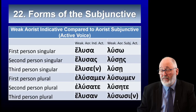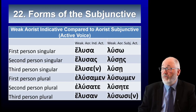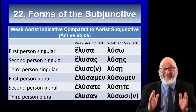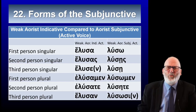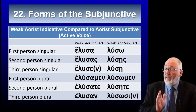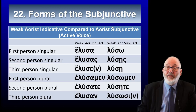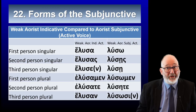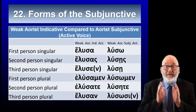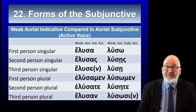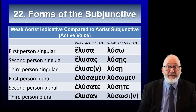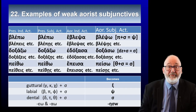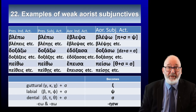What about the aorist? The aorist indicative active of luo is elusa, elusas, elusen. The aorist subjunctive active is lusō, lusēs, lusē. 'Go long' has kind of worked, but we've also added a sigma and used the endings — o, ēs, ē, ōmen, ēte, ōsin — which were the endings luo had for the present subjunctive active. As with elusa, the sigma interacts with consonants at the end of the verb stem in a predictable manner: a guttural plus sigma forms xi, a labial plus sigma forms psi, and a dental disappears leaving just the sigma. And eo and ao verbs lengthen to eta before the sigma of the aorist subjunctive.